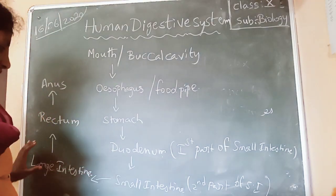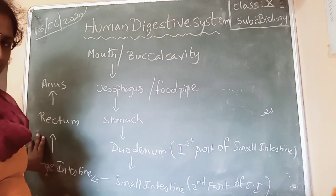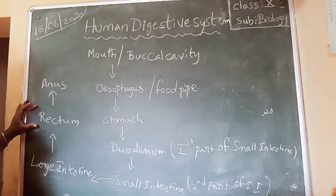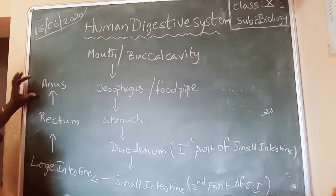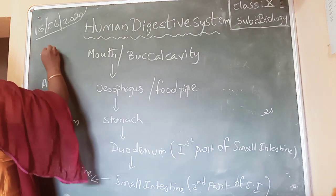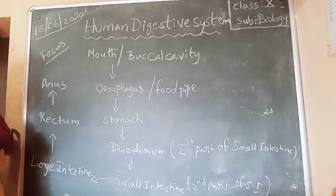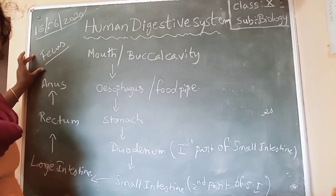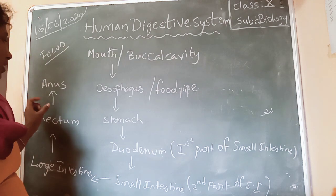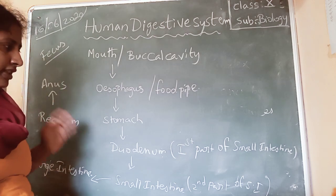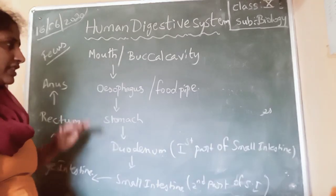Whatever undigested food remains is passed into the large intestine. In the large intestine, only water is absorbed, and whatever remains is sent into the rectum. From the rectum, the undigested food is sent out through the anus in the form of feces. Feces is nothing but motion — in scientific terms, you call it feces. This is the pathway of the human digestive system.